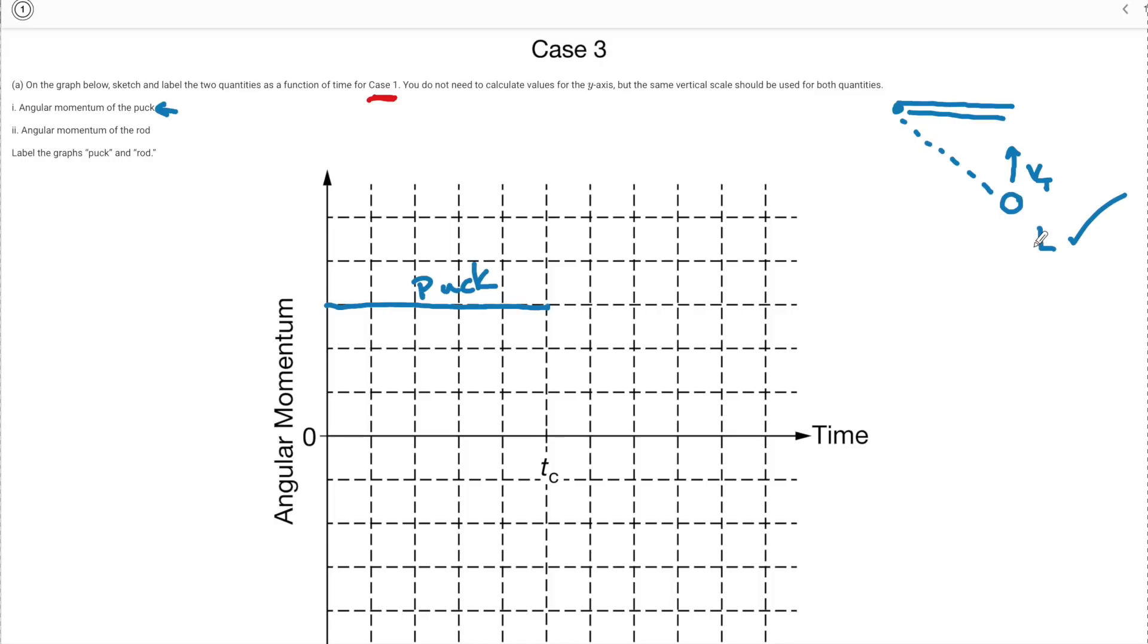I'll link it at the end and down in the description. If you're not sure, these ball striking rod problems they love them and it's so counterintuitive. You have to understand even though this puck is not spinning it still has an angular momentum.